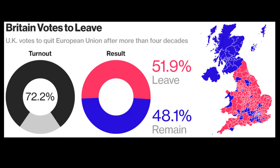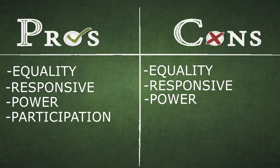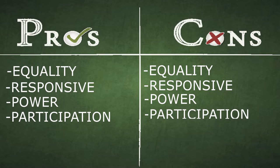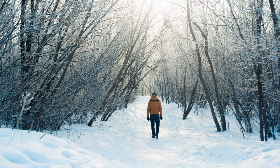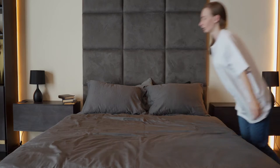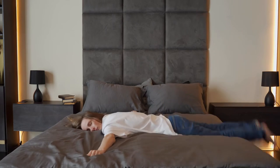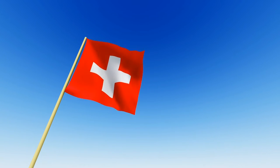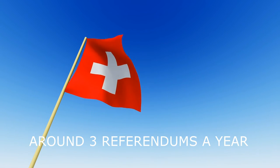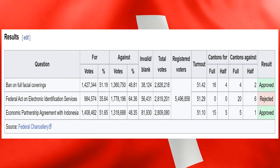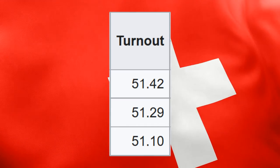The Brexit referendum saw high numbers — around 70 percent of Britain turned out to vote, which is a lot. Con — Participation: people may feel discouraged to vote based on the policy if they feel it's not important, or perhaps voter fatigue sets in. Switzerland has many referendums, averaging around three a year, and their last few have hovered around only 51 percent turnout.